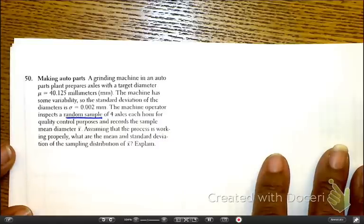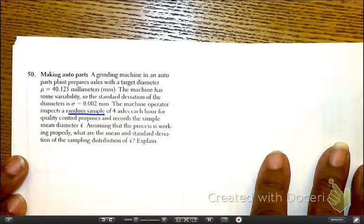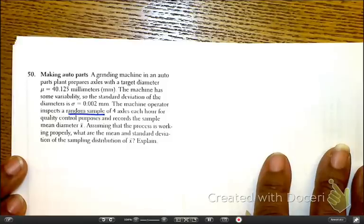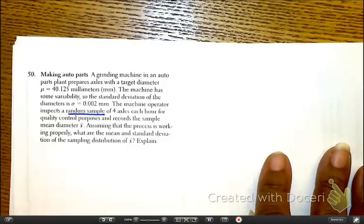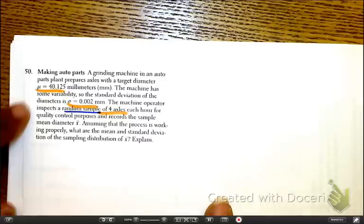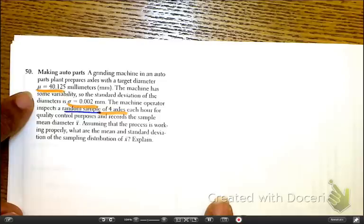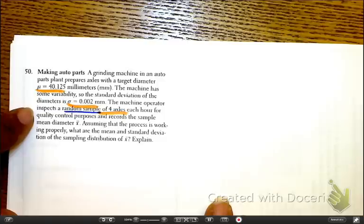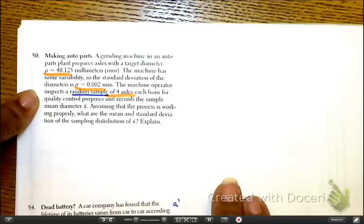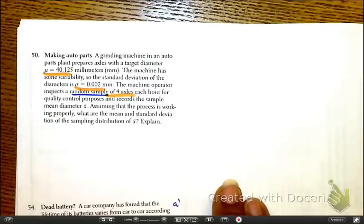Go to the notes that I gave you, problem number 50. Go ahead and pause and highlight the key information. As you look at the information here, you see you have a population mean of 40.12 millimeters with the standard deviation to be 0.002 and a random sample of only four axles that have been collected. That's kind of weak. How can I use this data if this is so small? We're going to have to make a certain assumption.